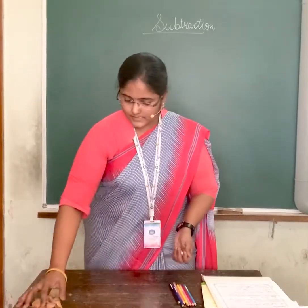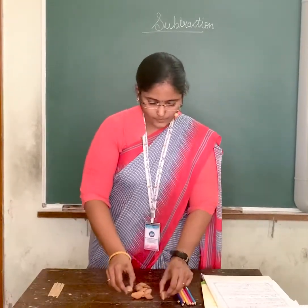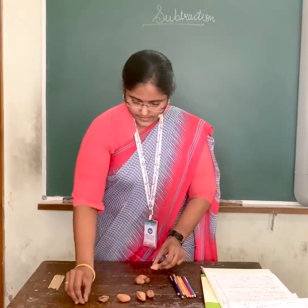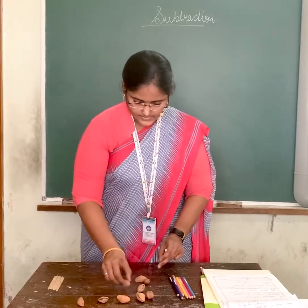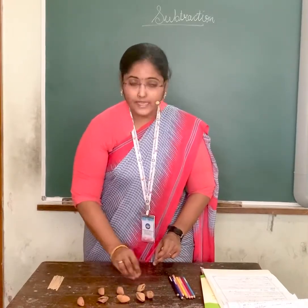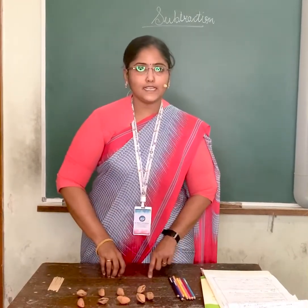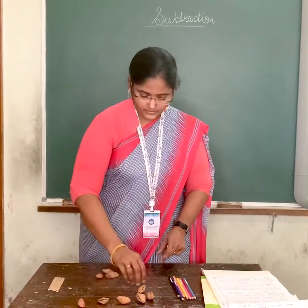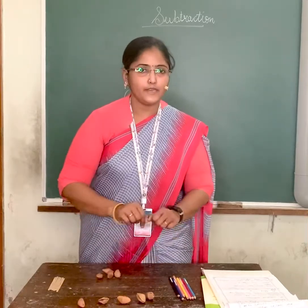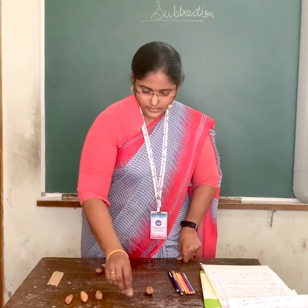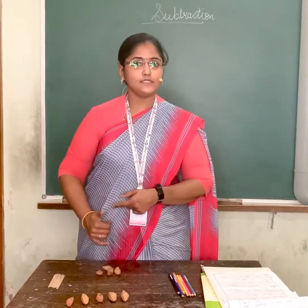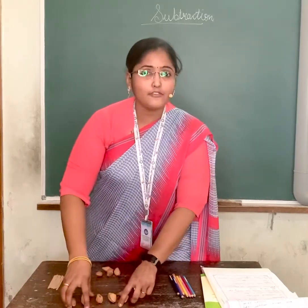Let's see — I have some seeds here. Let's count them: 1, 2, 3, 4, 5, 6, 7, 8, and 9. From 9 seeds, I will take away 4 seeds: 1, 2, 3, 4. Let's count how many are remaining: 1, 2, 3, 4, 5. From 9 seeds, if we take away 4 seeds, the remaining will be 5.